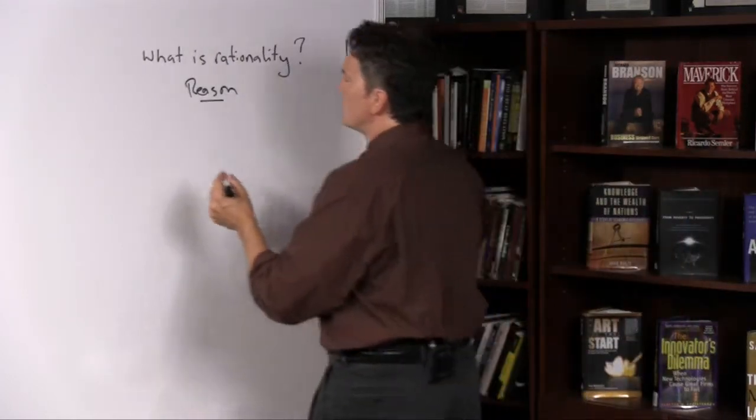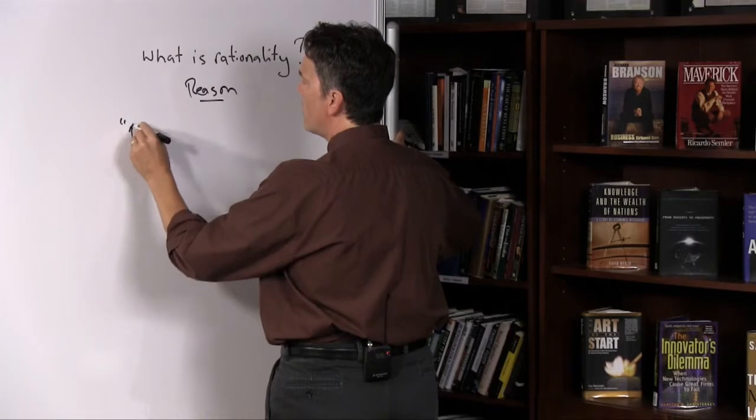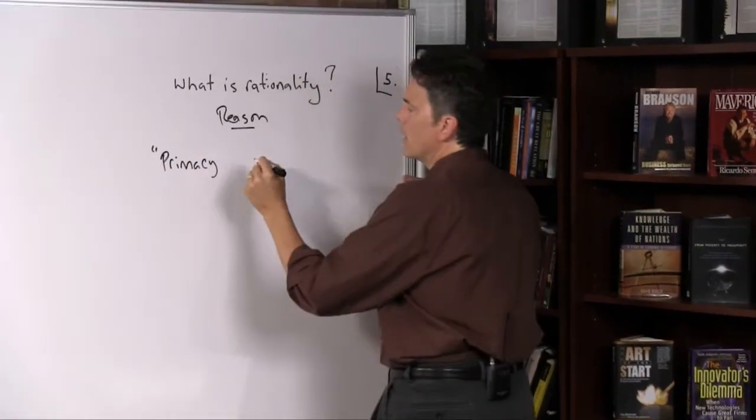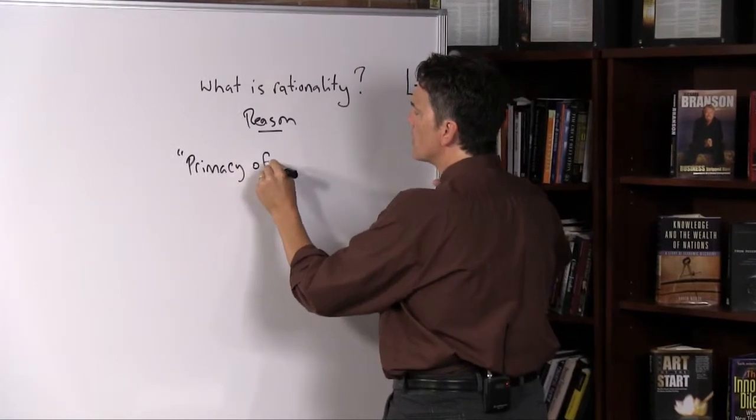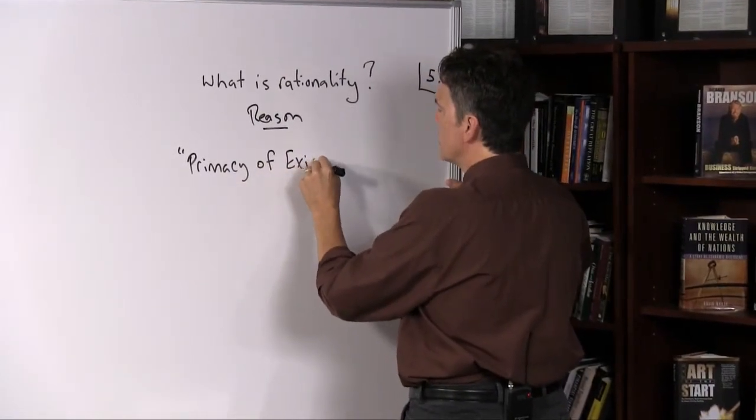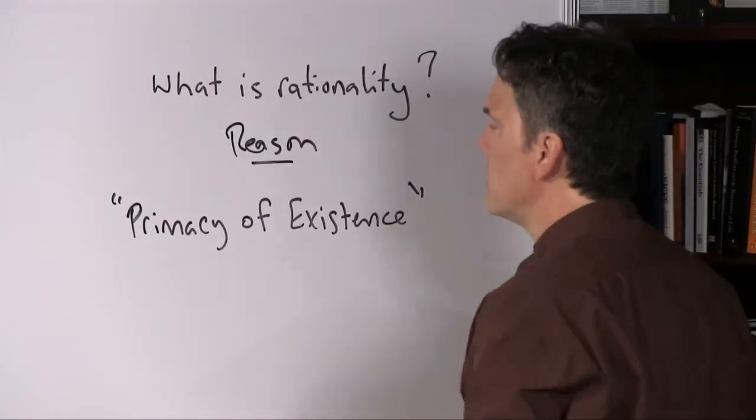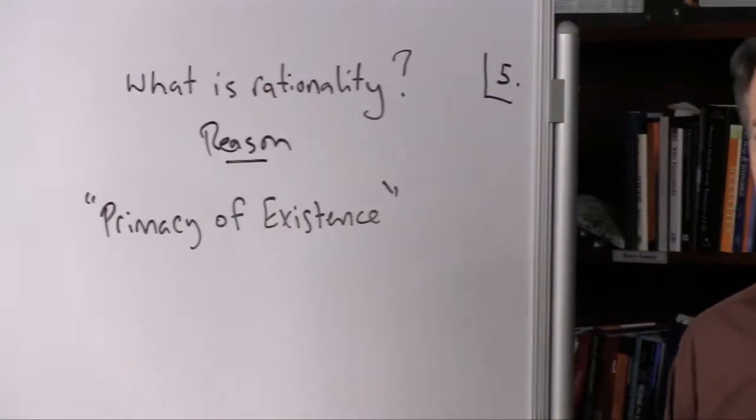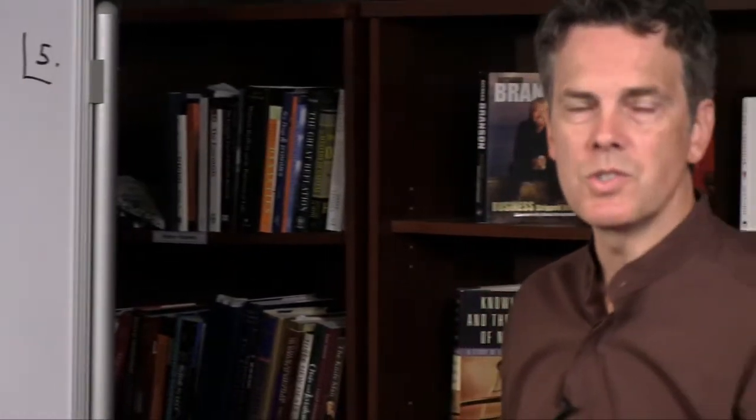Now, there's a bridge concept that she uses here that has both a metaphysical and an epistemological component that she calls the primacy of existence. And I will introduce it to you by means of a quotation from Rand and then gloss it myself. So in Rand's words, this is what the primacy of existence is.